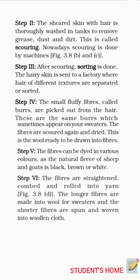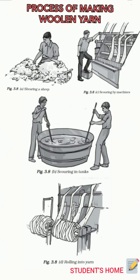Step five: the fibers can be dyed in various colors, as the natural fleece of sheep and goat is black, brown, or white. Step six: the fibers are straightened, combed, and rolled into yarn. The longer fibers are made into wool for sweaters and the shorter fibers are spun and woven into clothes. As you can see in the diagrams, this is how we convert fiber into wool that is ready to be knitted into clothes like sweaters.